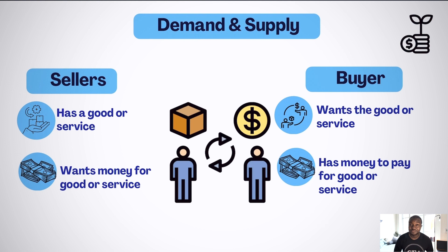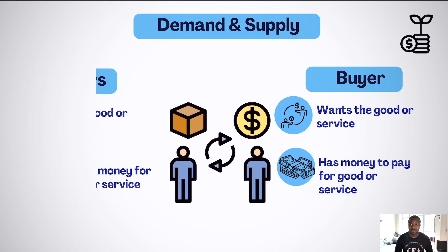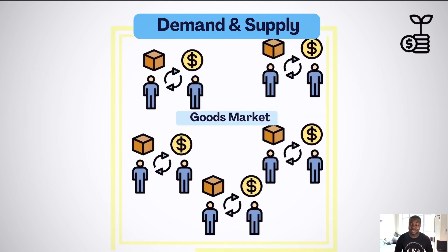Note: these types of transactions happen millions of times daily. Pires might also be in need of another product which Ben doesn't have, and therefore has to look for someone who has the product and is willing to sell. For this reason, a marketplace exists where buyers and sellers meet to carry out their transactions. This type of market is called the goods market.